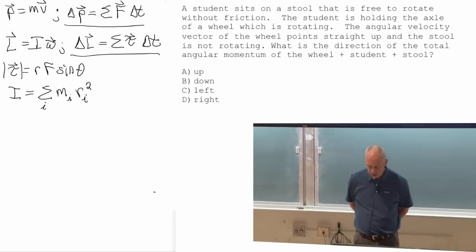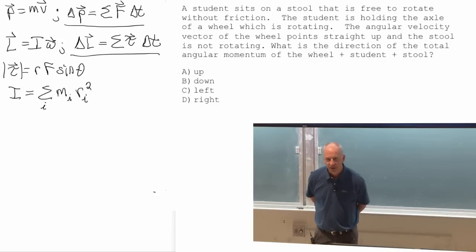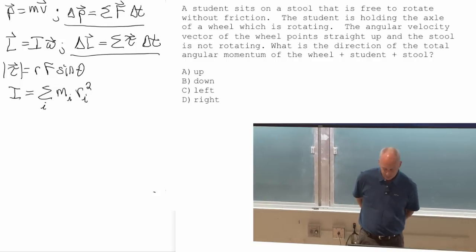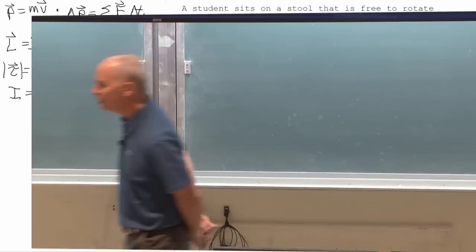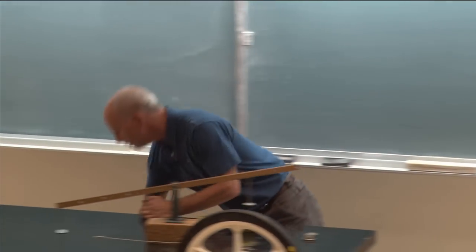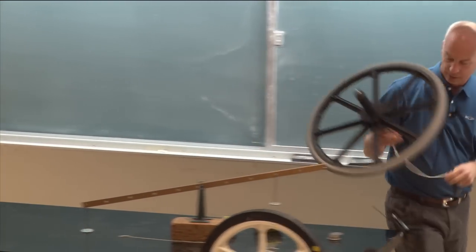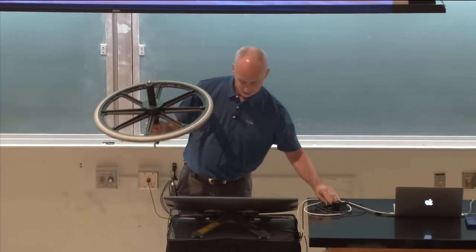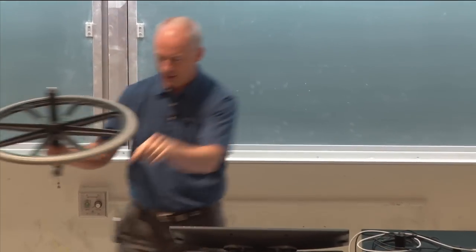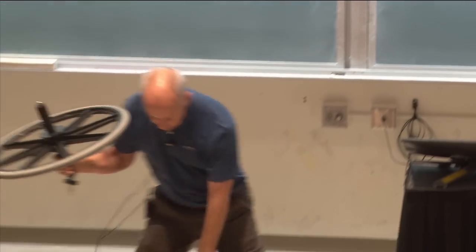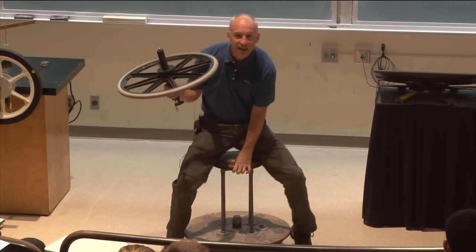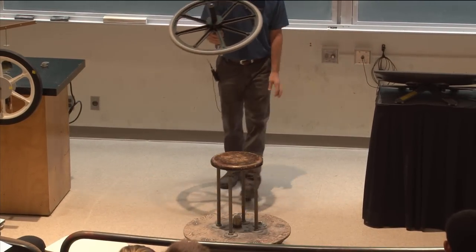Student sits on a stool that is free to rotate without friction. At some point I'm gonna ask for a volunteer, student is holding axle of a wheel that's rotating. Volunteer will have axle of wheel, like that, sitting on this stool. This stool rotates fairly easily. It's not like there's no friction, but there's not very much.